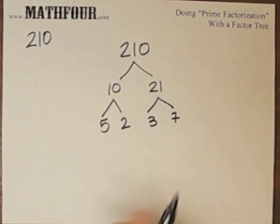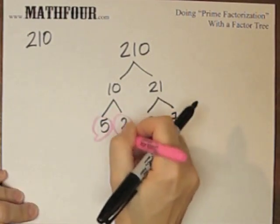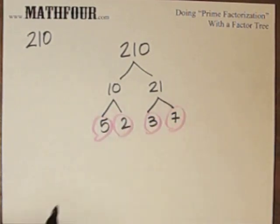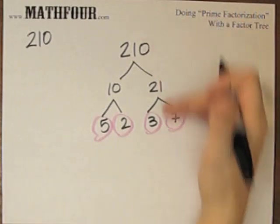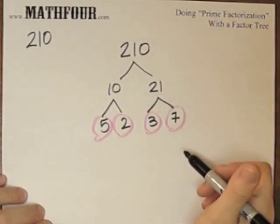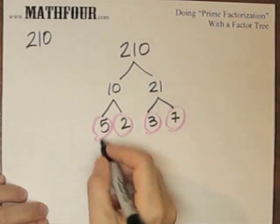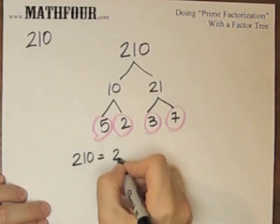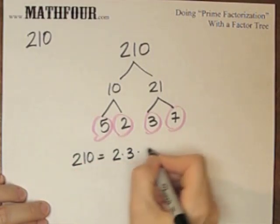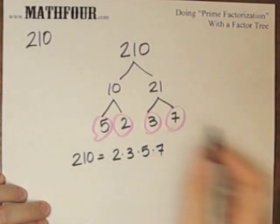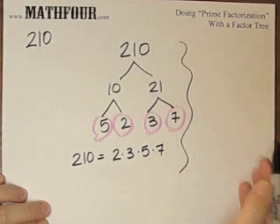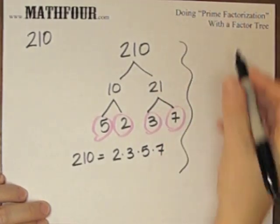Oh wow, look at that — this is a prime, this is a prime, this is a prime, this is a prime. This is a very nice and neat, organized factor tree. So I can write 2 times 3 times 5 times 7. They don't always end up like this, nice and symmetric.